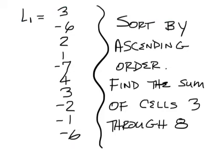The next practice problem. You have list 1 given to you and you have to sort list 1 by ascending order and then find the sum of cells 3 through 8. The answer is negative 3.